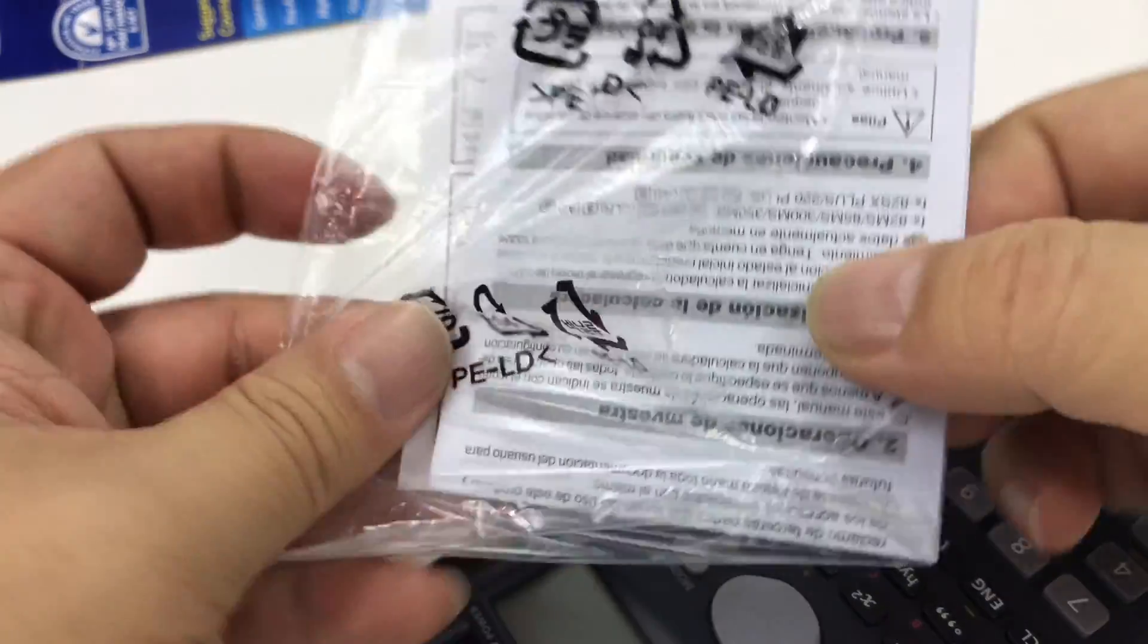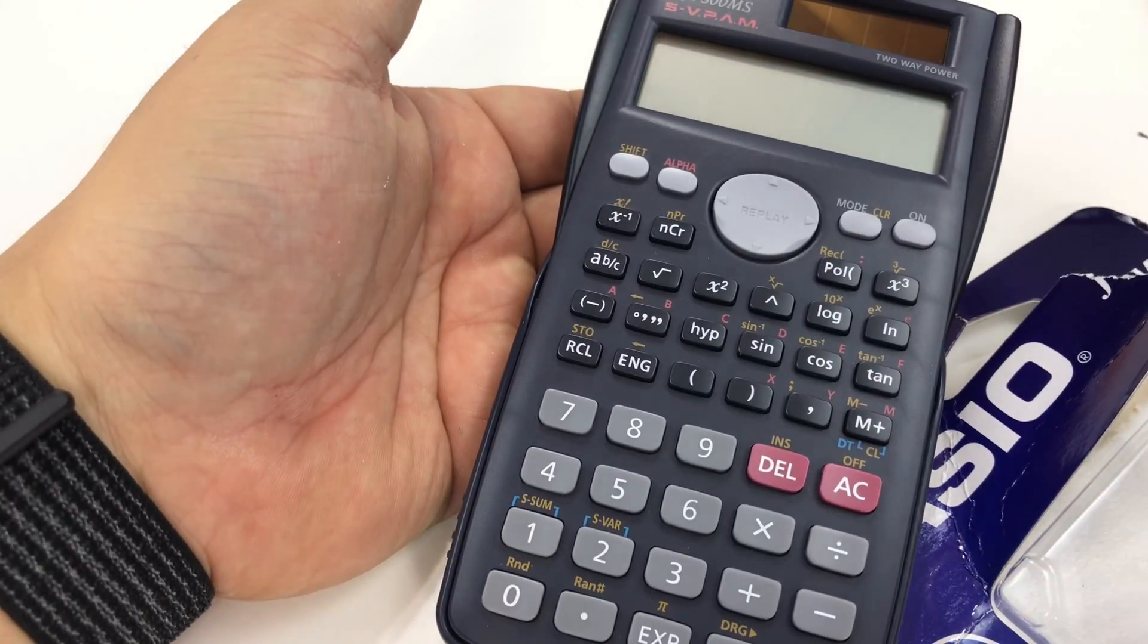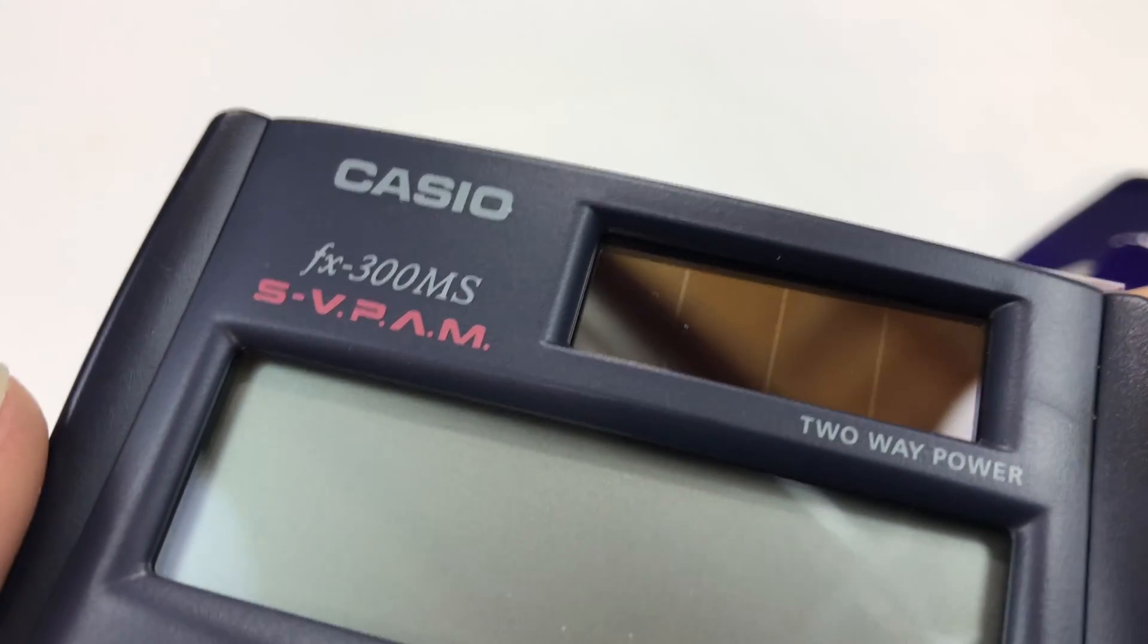Okay, so now we get the calculator out, there is a little manual here stuck on the back. So you have that, a nice little user's guide. And here is the calculator itself, it's like a flyover, big display there.